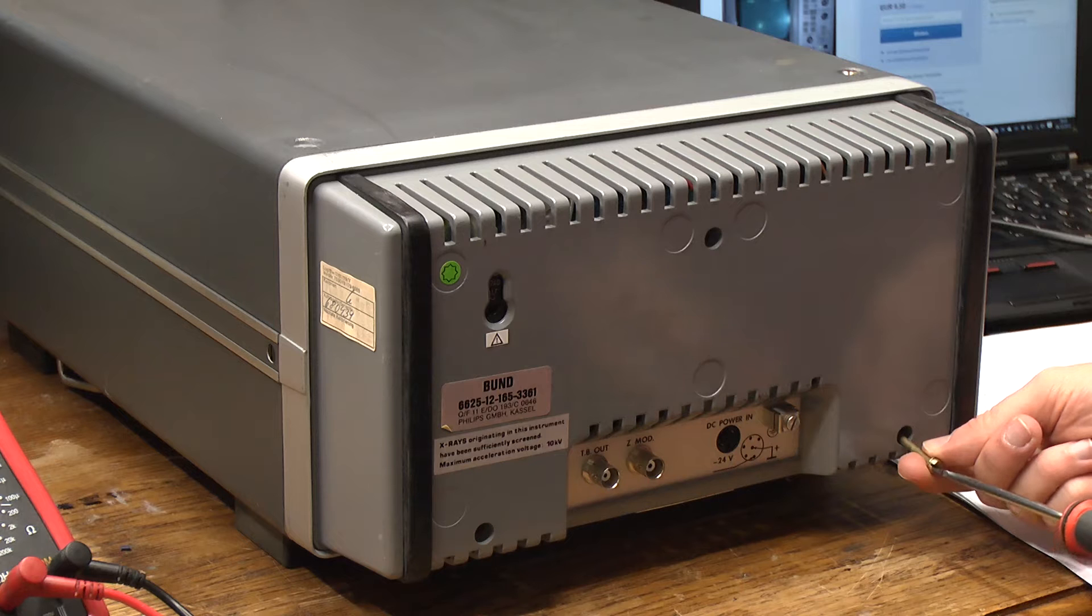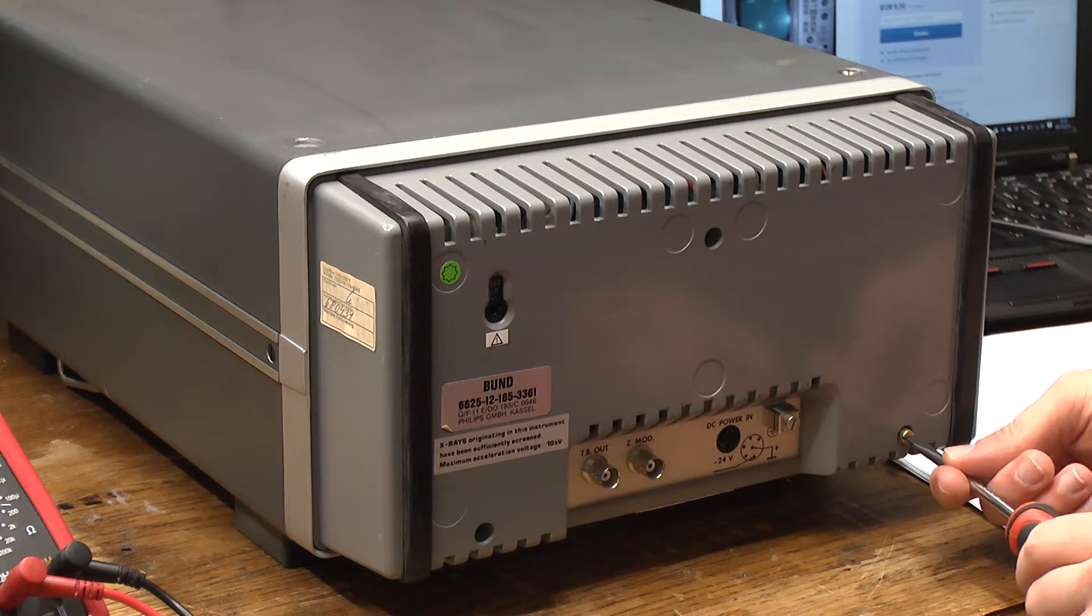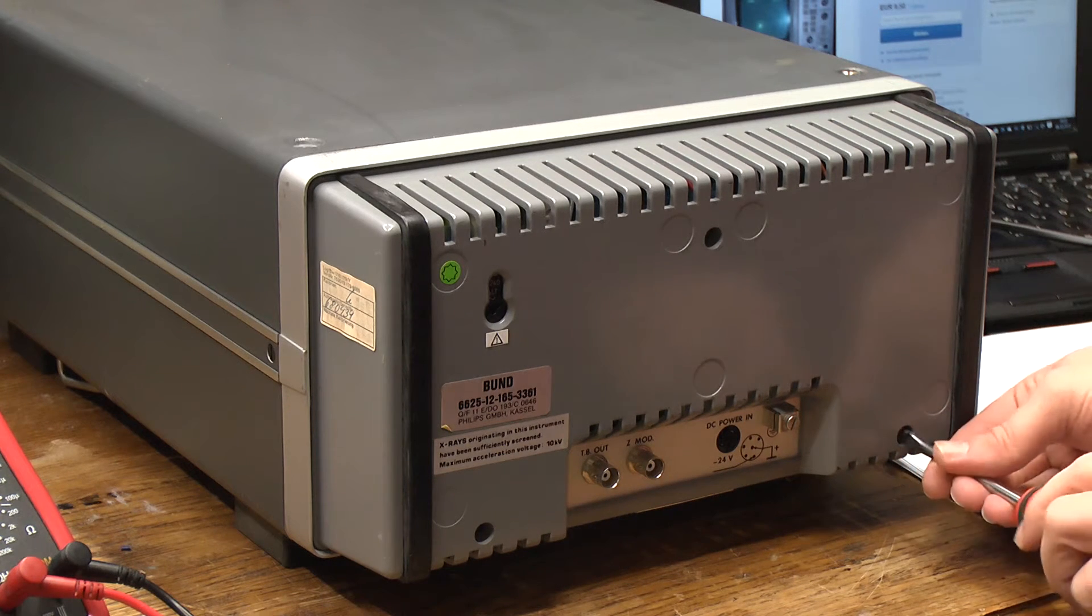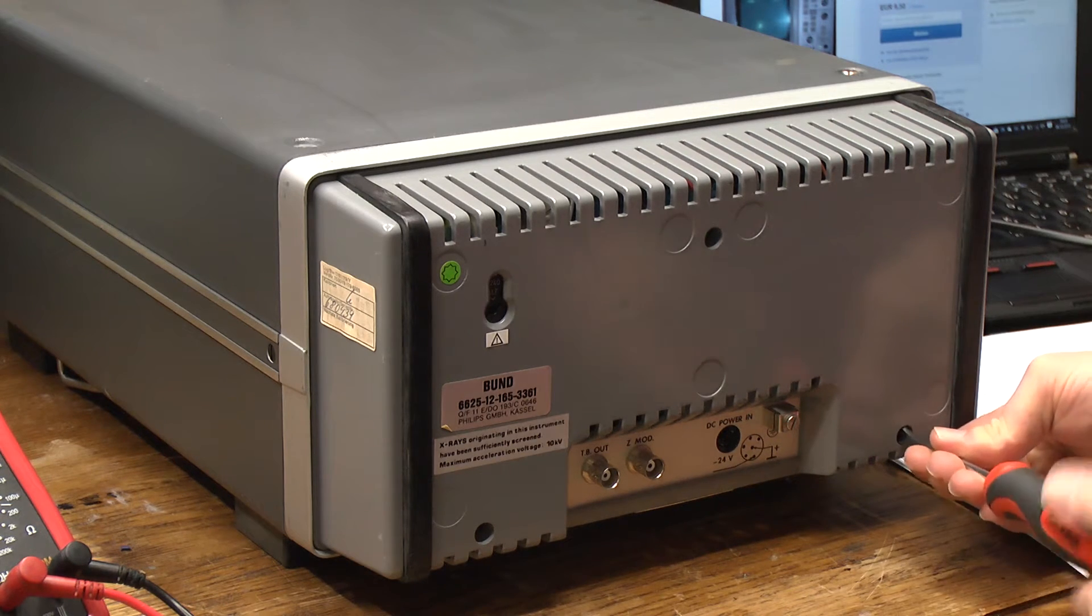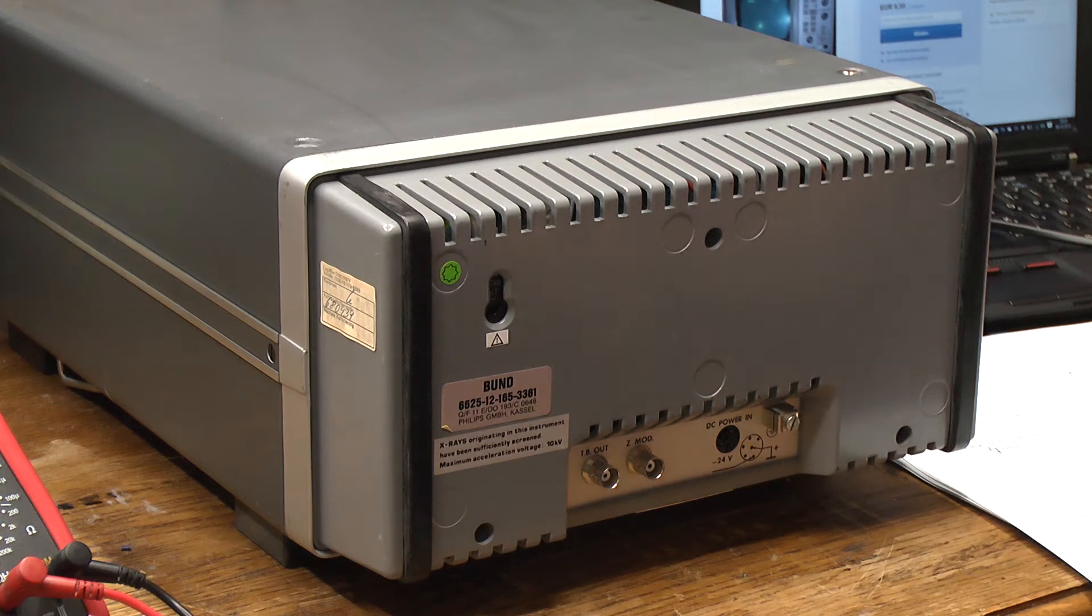But when I then wanted to remove the top cover another time, I couldn't get the screw back out anymore. And when I forced it, the head snapped off. And now the remains of the screw are stuck in the screw hole. I guess there is not a whole lot that I can do about that.